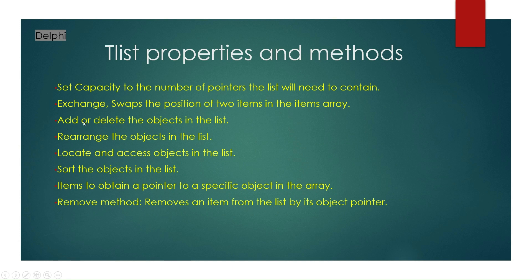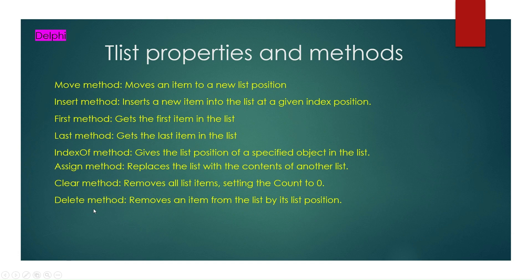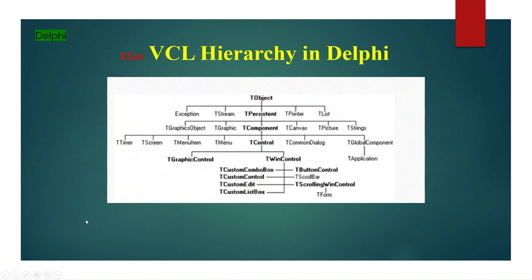Some of the properties and methods of TList include: set, exchange, add, delete, rearrange, locate, sort, find, remove, move, insert, first, last, indexOf, assign, clear, and delete.